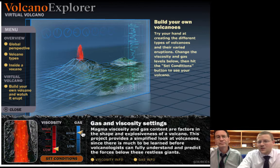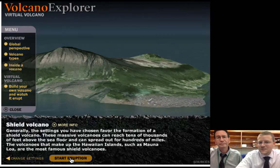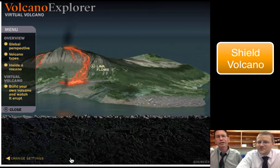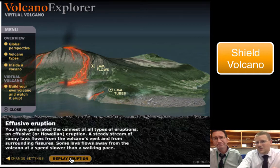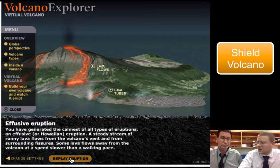If we pick low viscosity and low gas, let's see what kind of volcano we create. We are seeing very fast-moving lava, and it's not very explosive — there wasn't much of a gas buildup. Magma flowing outwards would spill out in a broad shape. We call these shield volcanoes, because they look like a broad shield.